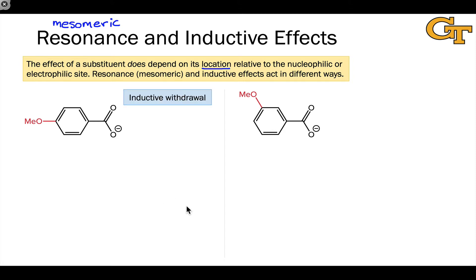First, let's think about the methoxy group as an inductively withdrawing group. Oxygen is an electronegative element. If we don't think about the lone pairs on that oxygen atom and just the fact that it's electronegative, we're going to realize that that oxygen is going to withdraw electron density from the ring through an inductive effect. So we say that the oxygen is inductively withdrawing.